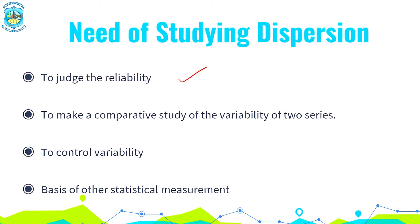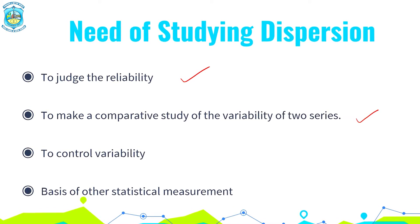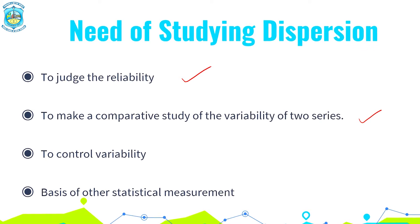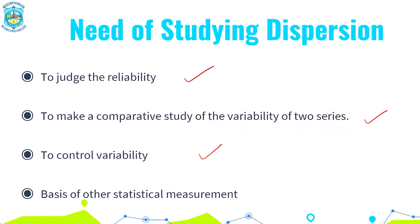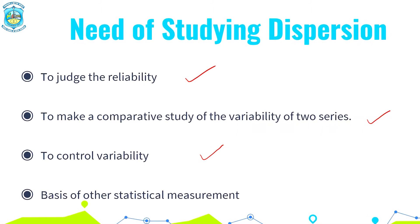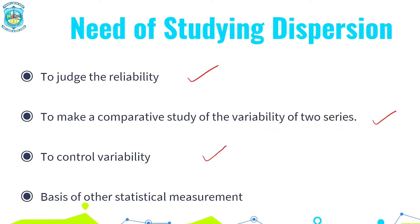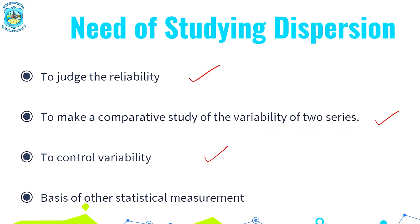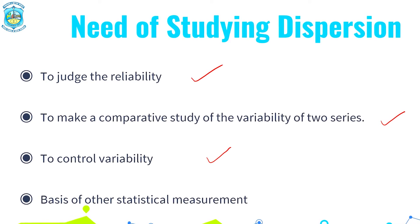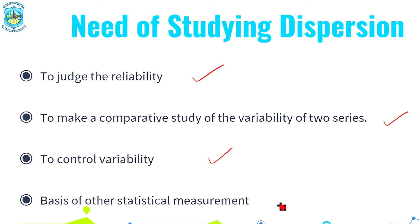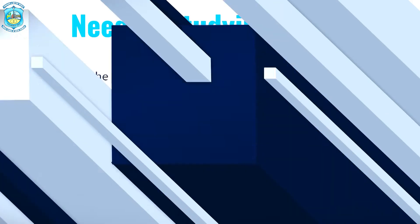The second point is to make a comparative study of the reliability of two series. To control the variability. Because if you want to control the variability, you need to control the dispersion. It is always standard deviation upon mean into 100. So this standard deviation is a measure of dispersion. The basis of other statistical measures of dispersion.